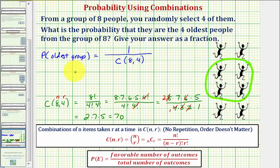So the probability of selecting a group of four that would be the four oldest people from the larger group would be one-seventieth.